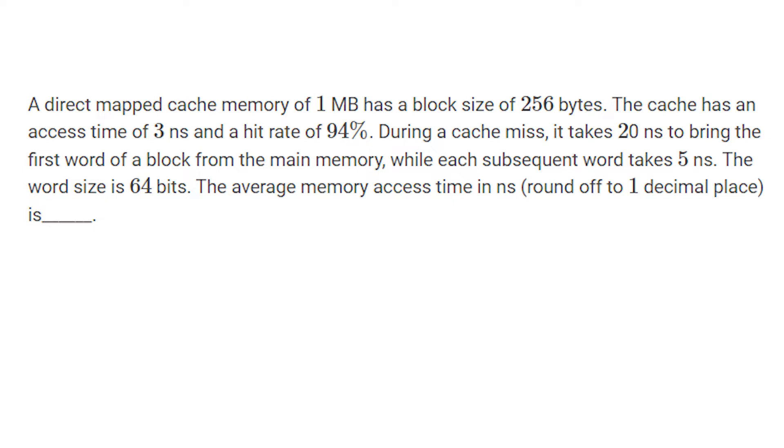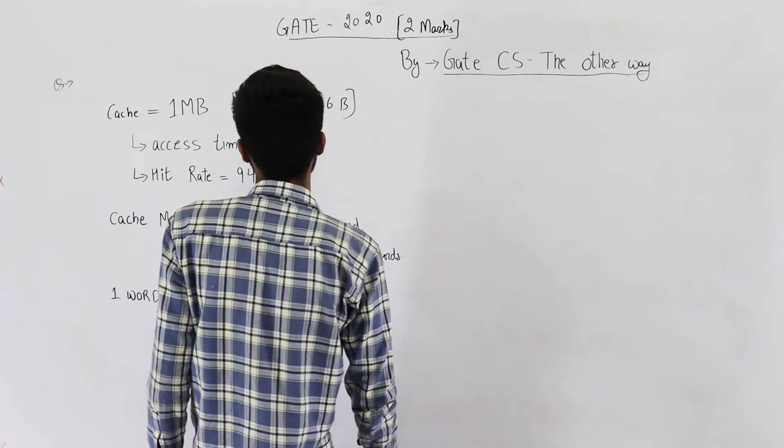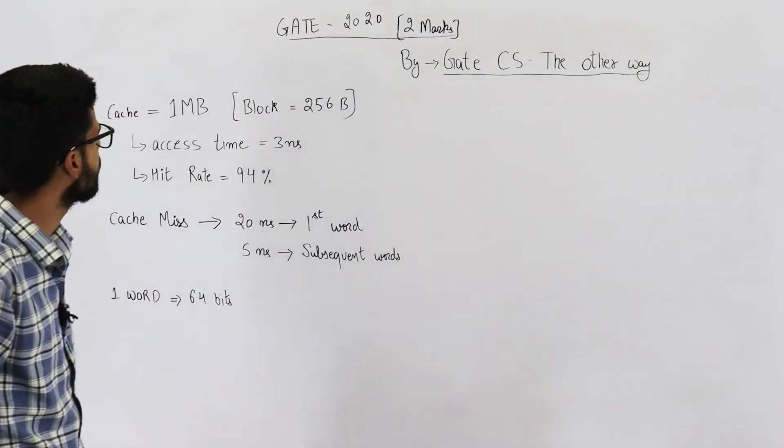During a cache miss, it takes 20 nanoseconds to bring the first word of a block from the main memory, while each subsequent word takes 5 nanoseconds. The word size is 64 bits. The average memory access time in nanoseconds, round off to 1 decimal place, is what we need to find. This is the data given in the question.